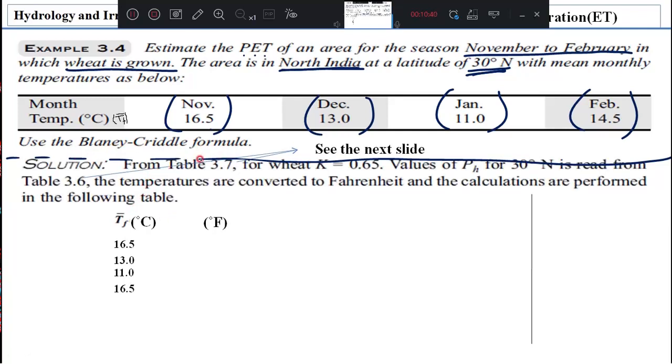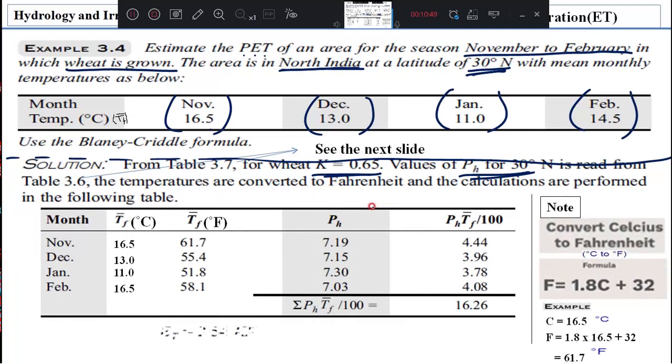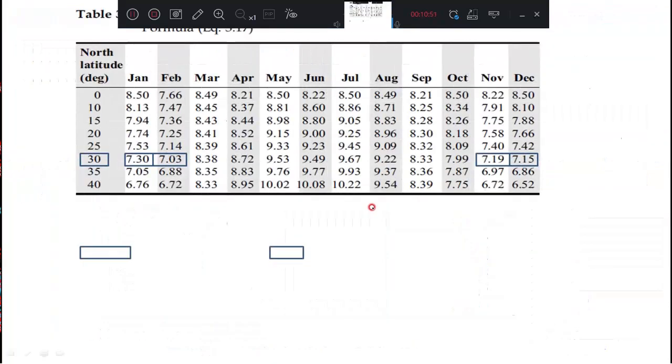Then we need to calculate it. The solution says that from the table, we will collect K value and we will collect the pH value. Now we will go to the table. I will show you that.